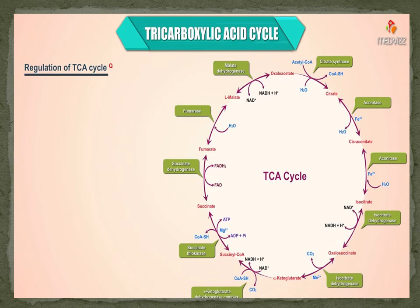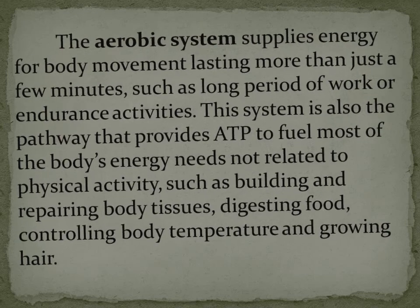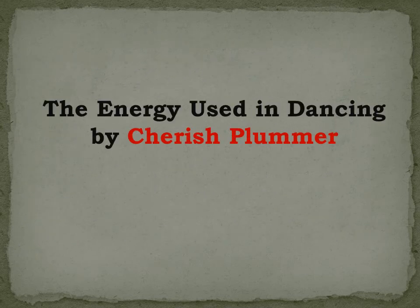This is an example of the tricarboxylic acid cycle. The aerobic system supplies energy for body movement lasting more than just a few minutes, such as long periods of work or endurance activities. This system is also the pathway that provides ATP to fuel most of the body's energy needs not related to physical activity, such as building and repairing body tissues, digesting food, controlling body temperature, and growing hair.